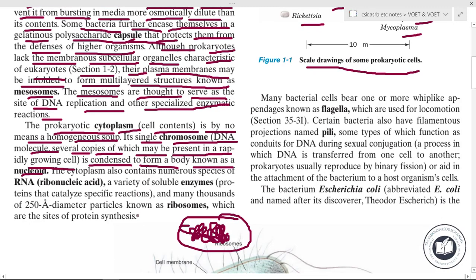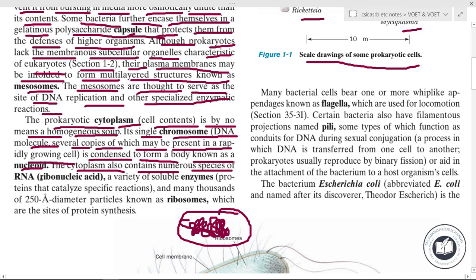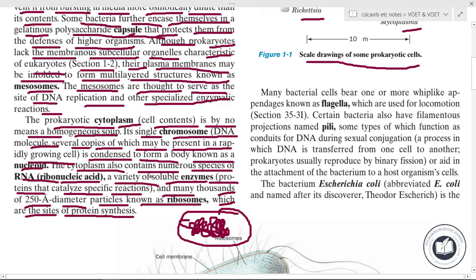The cytoplasm also contains numerous species of RNA, a variety of soluble enzymes and proteins that catalyze specific reactions, and many thousands of 250 angstrom diameter particles known as ribosomes, which are the sites of protein synthesis.